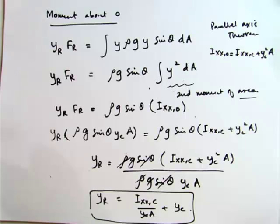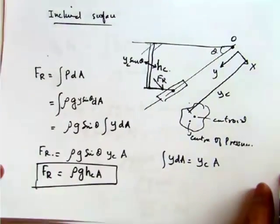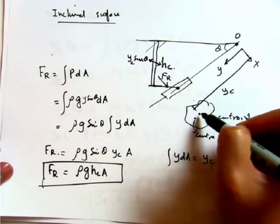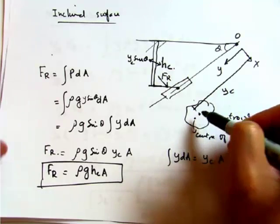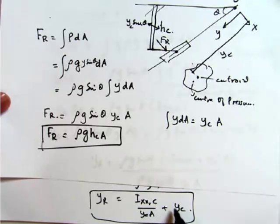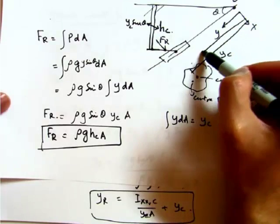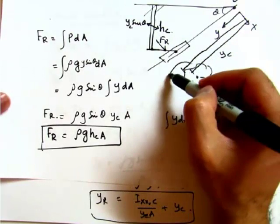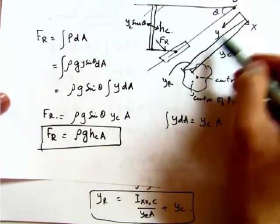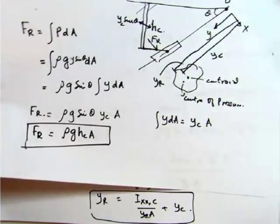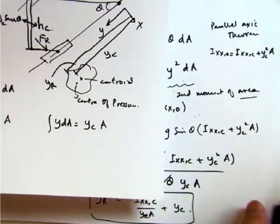Going back to the drawing: we have Y_C up to the centroid, and then this additional term I_XXc over (Y_C·A) gives us Y_R, which is located further down. So the resultant force acts at a distance Y_R from O, which is actually longer than the centroidal distance by itself. That completes the derivation.